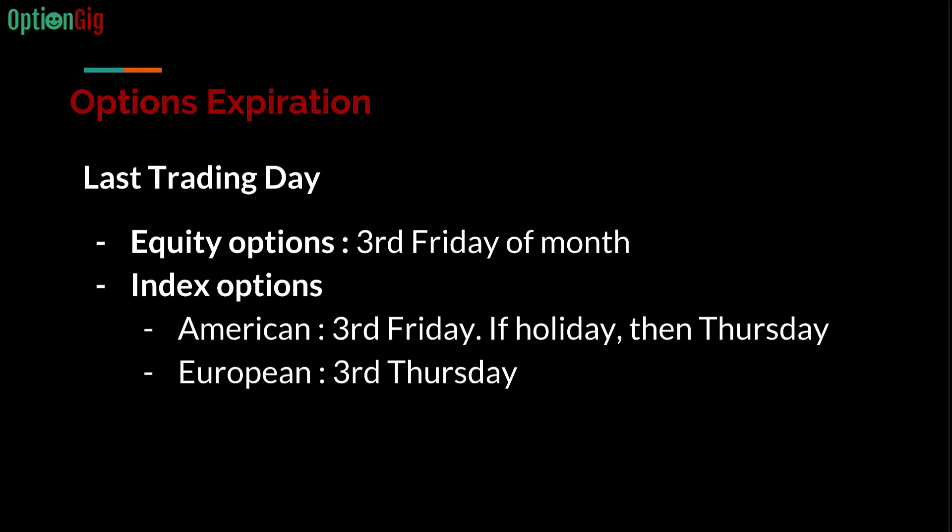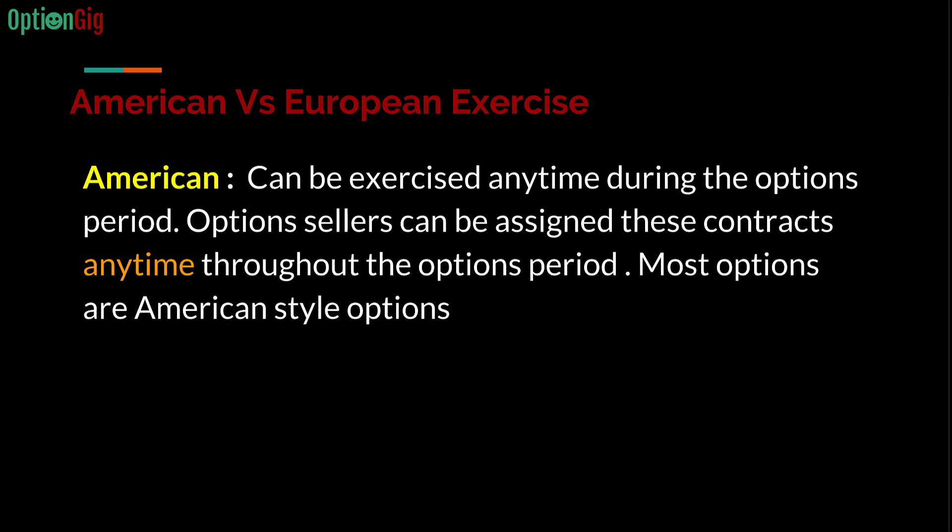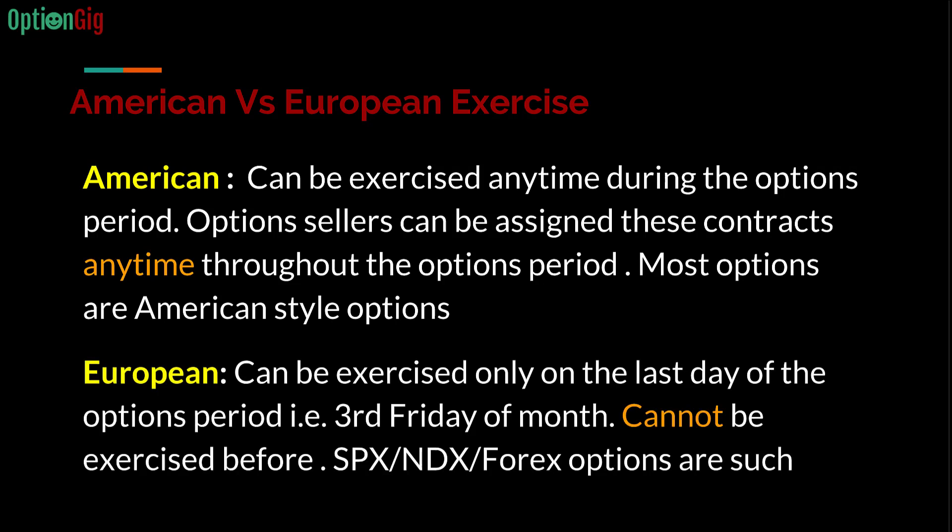There are two types of options: American and European. This does not mean European options trade on European exchanges or come from European companies. American-style options can be exercised at any time during the option's lifetime. Most options we deal with are American style. European-style options — such as SPX, NDX, and Forex index options — can only be exercised on the last day of the options period, so you don't have to worry about early assignment with those.